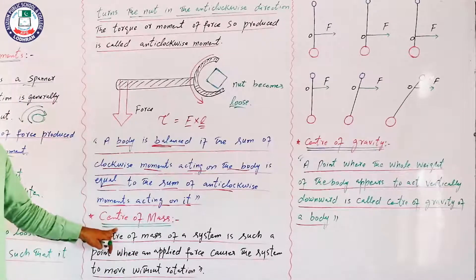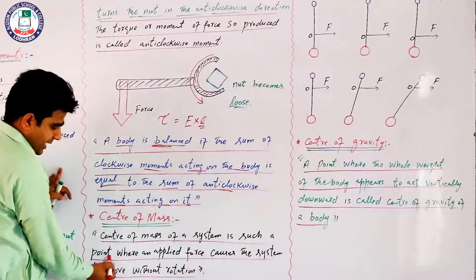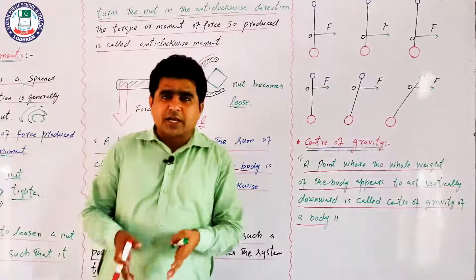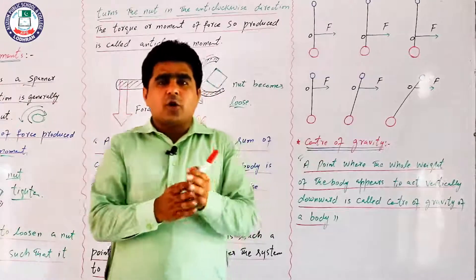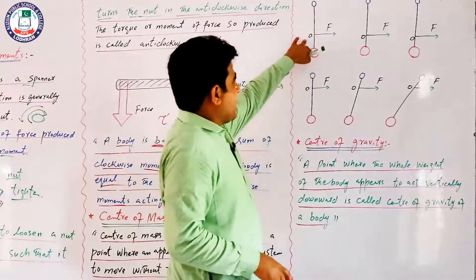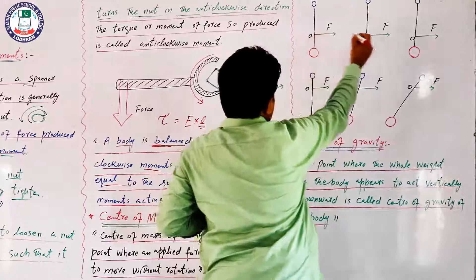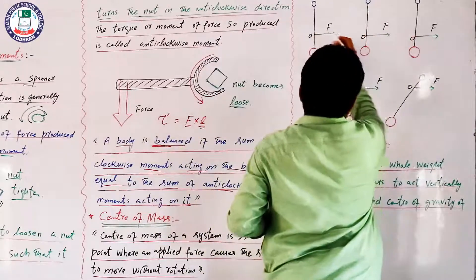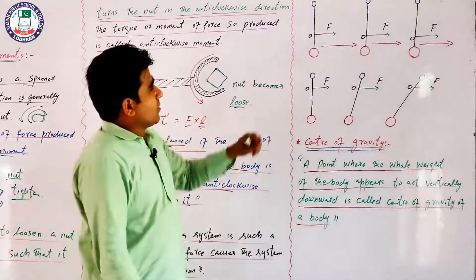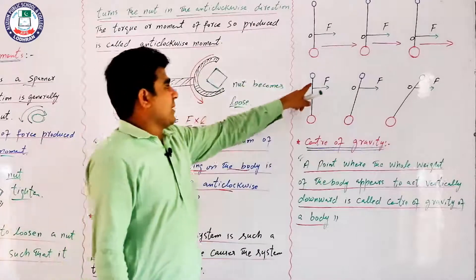अब Center of Mass: किसी body का center of mass वो point होता है जहां applied force body को बिना rotation के move कराए। Center of mass of a system is such a point where an applied force causes the system to move without rotation। Body का center of mass यह वाला point होता है — यहां force लगाएं तो body forward move करेगी, कोई rotation पैदा नहीं होगी।